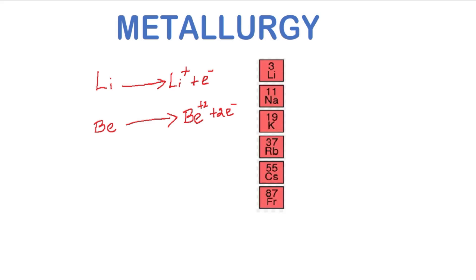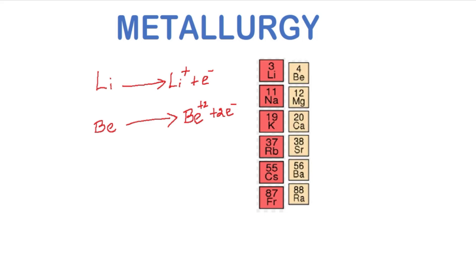Thus, when we move from lithium to francium, the electropositive nature increases. Similarly, when we move from beryllium to radium, electropositive nature increases. But when we move from lithium to beryllium, electropositive nature decreases. The same trend cannot be predicted for d-block elements, as there are some exceptions.